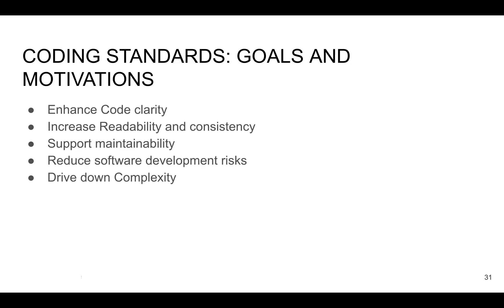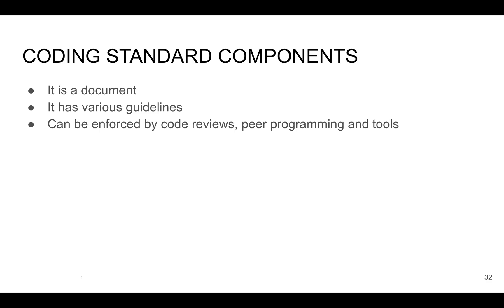So we know why we need coding standards and what the benefits are. Let's take a look at what a coding standard is. A coding standard is simply a document. Your team, based on each member's experience, can organize a meeting and decide how they are going to create the code, what they want to do, and what they want to avoid during development. Or maybe there are already prepared code guidelines in your project or company that you can follow.